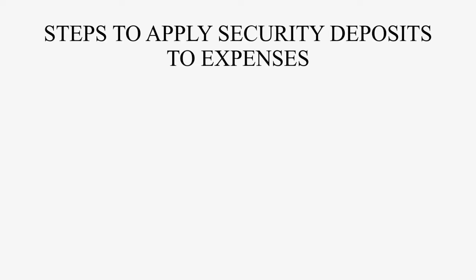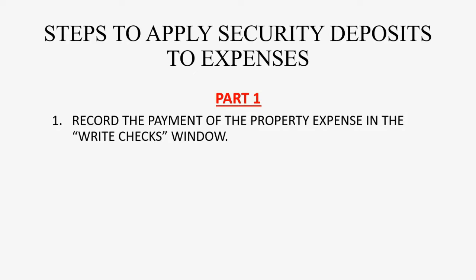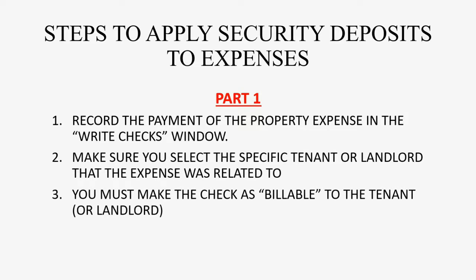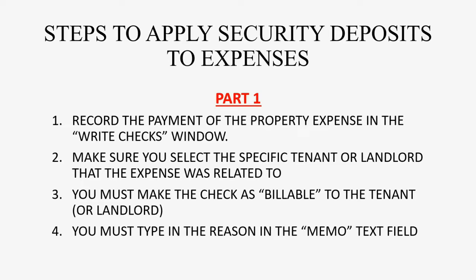So what are the steps to apply the security deposit to expenses? There's the first part, which is very simple. We record the payment of the property expense in the right checks window. We make sure that we select the specific tenant that the expense has applied to, and you must make sure that you check it as billable to that tenant or that landlord.